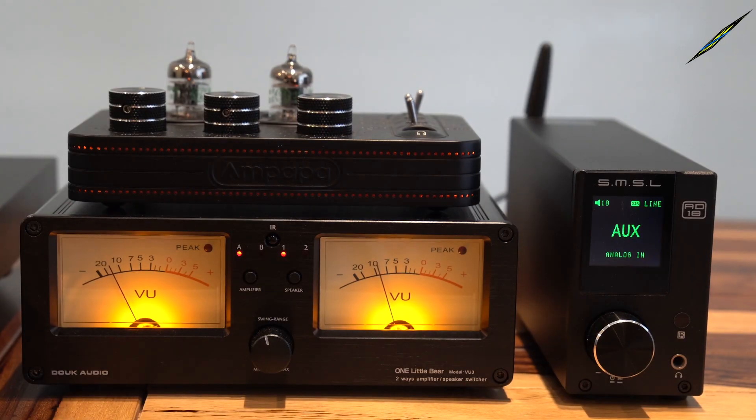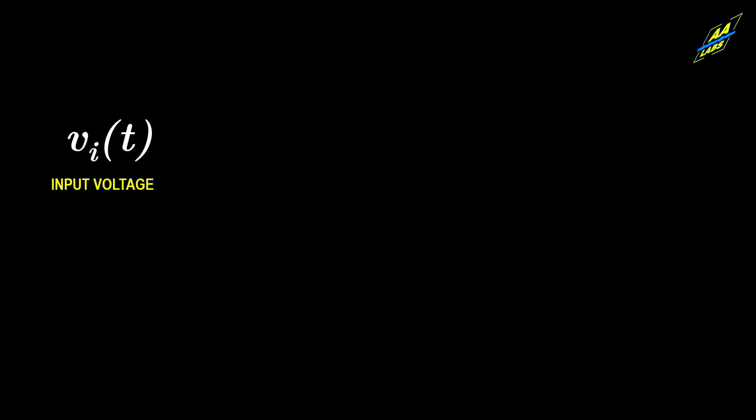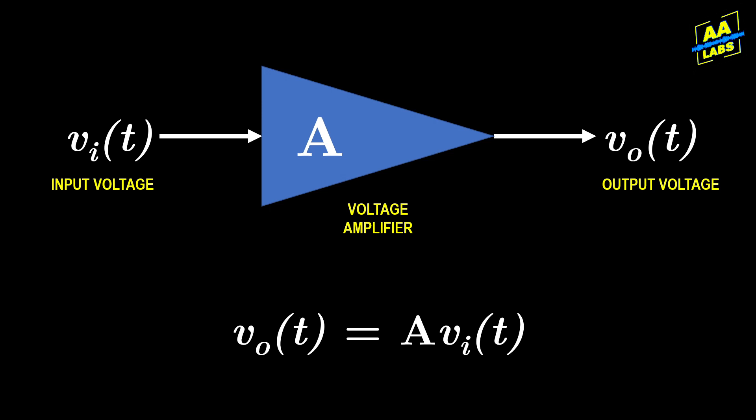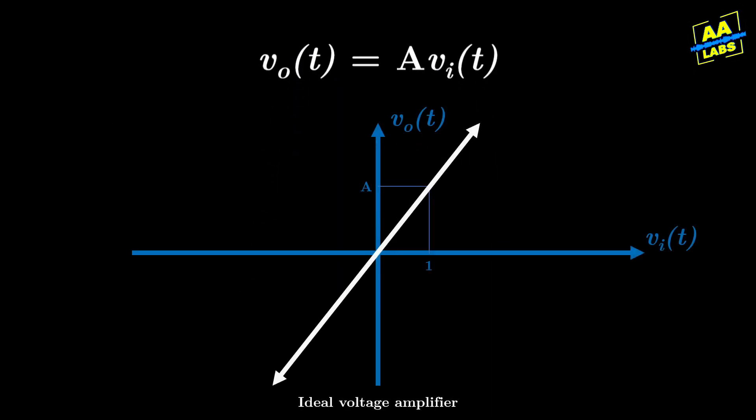In my first example, we're going to take a look at a common and practical electrical system, a voltage amplifier. This apparatus takes an input voltage and multiplies it by some constant to produce an output voltage. It can be represented by this equation. Visually, this is the input-output relationship for an ideal voltage amplifier. If we input a voltage of 1, we get an output voltage of A. Thus, this line has a slope of A.